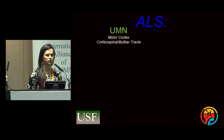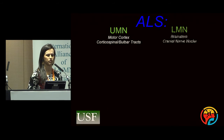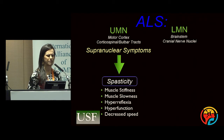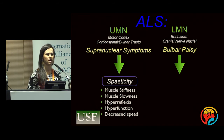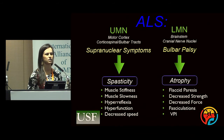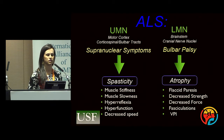Just a little bit about bulbar dysfunction and ALS. As we all know, ALS is due to the degeneration of both upper and lower motor neurons, giving rise to supranucleus symptoms: overall spasticity, muscle stiffness, slowness, hyperreflexia, and hyperfunction. And at the same time, a bulbar palsy with atrophy, flaccid paresis, decreased strength, fasciculations, and velopharyngeal incompetence.